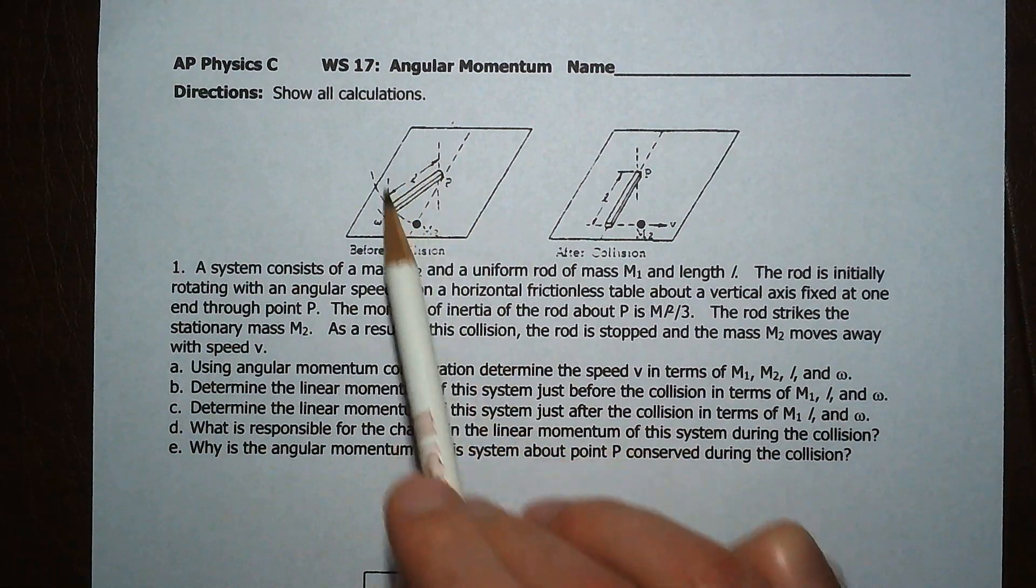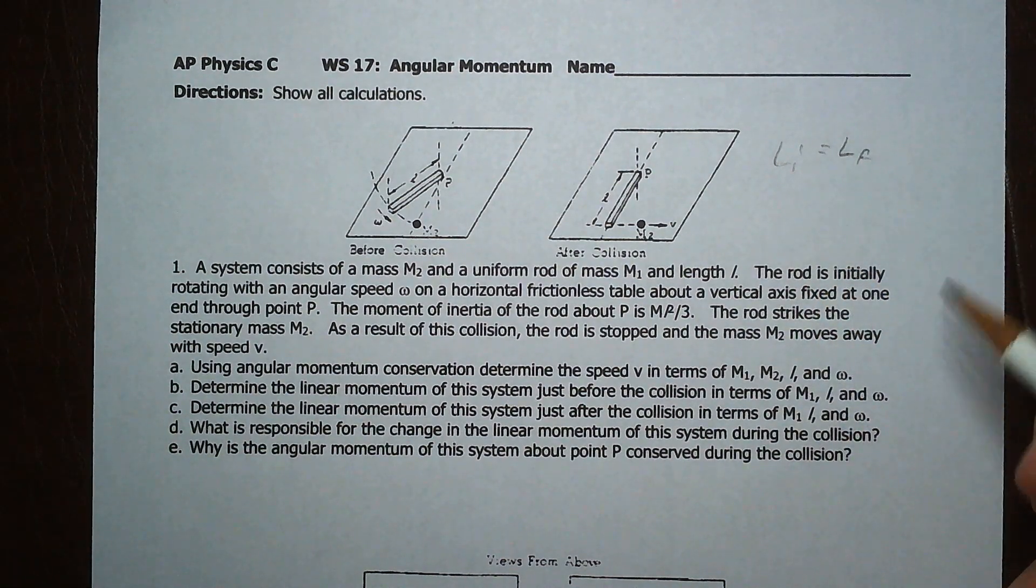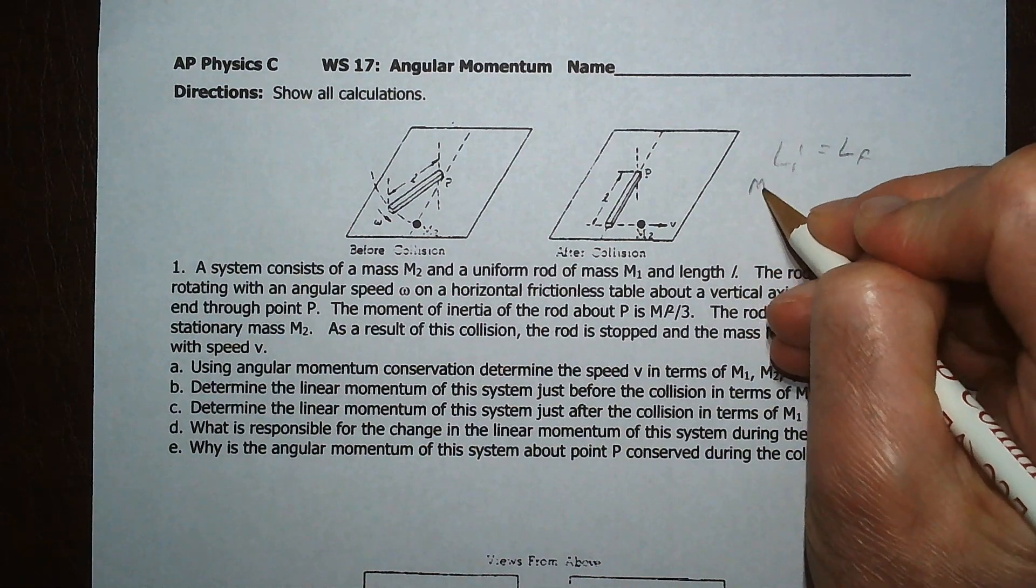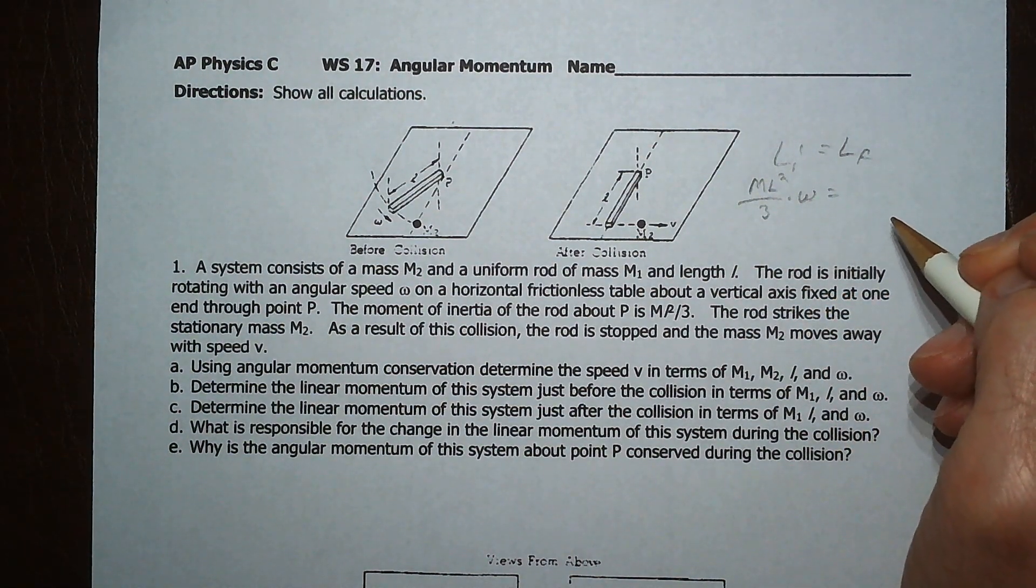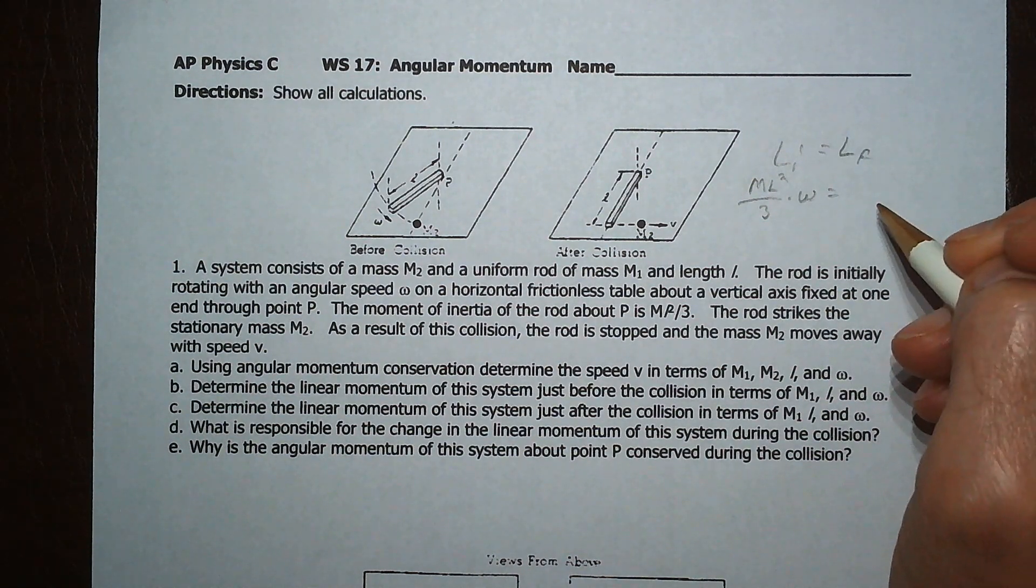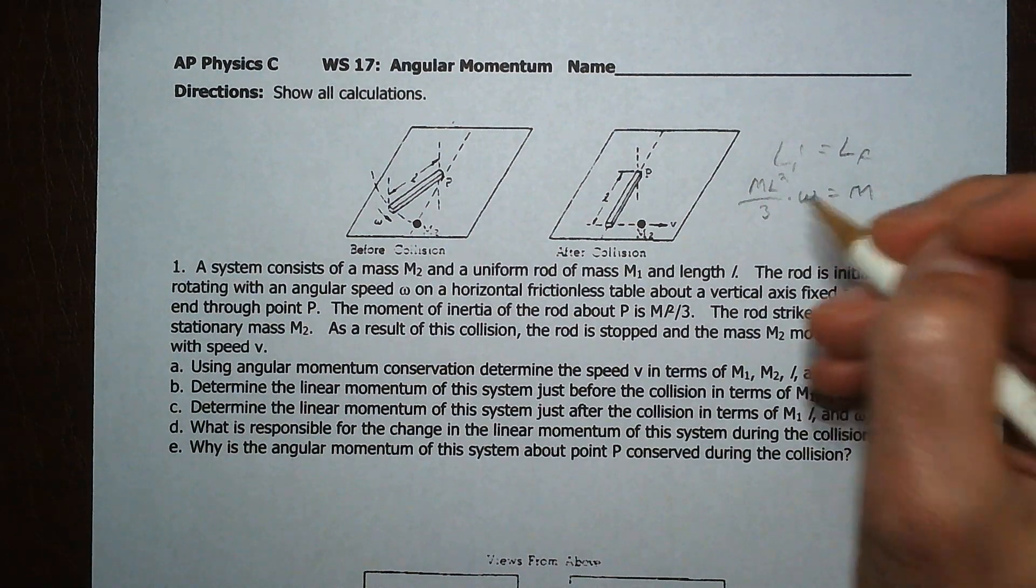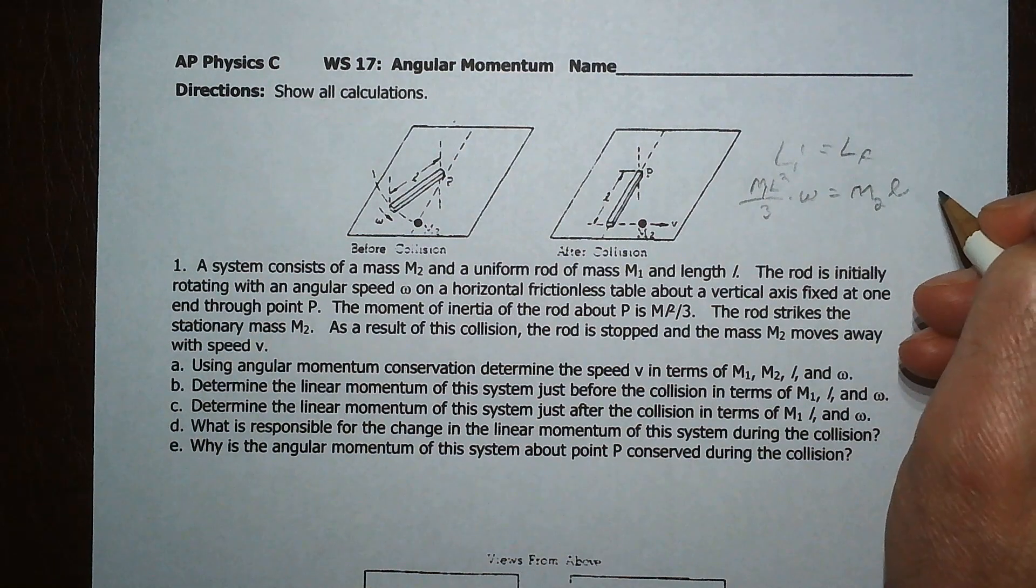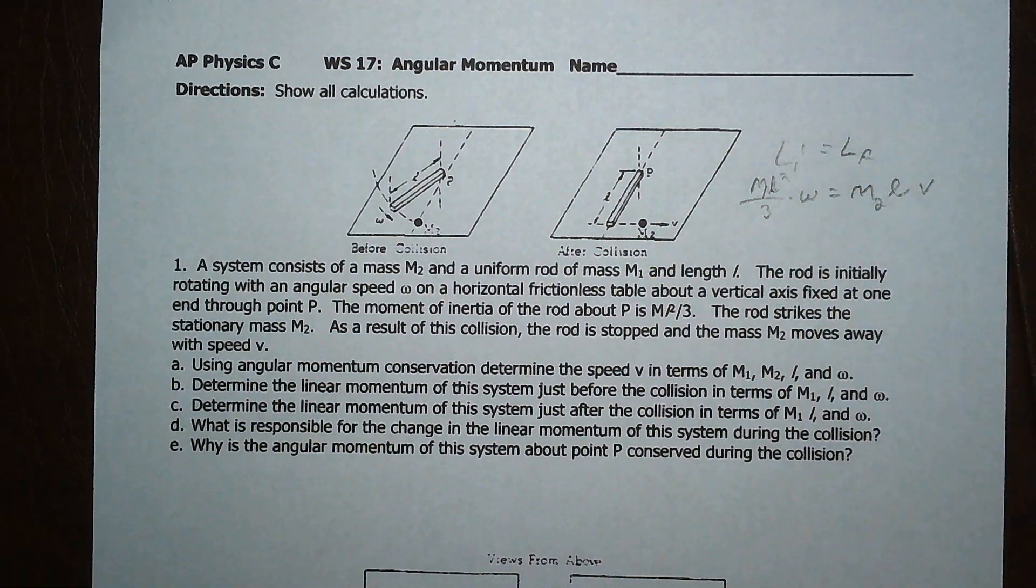Okay, so this thing rotates around here and hits this ball, comes to stop, and the ball goes out. So using angular momentum conservation, that means Li equals Lf. Well, it tells you what I is. It says it's ML squared over 3, and tells you what the angular speed is, so that's gonna be ML squared over 3 times omega, and that must be equal to MR squared times omega. And omega is V over R, so that's just simply going to be the mass 2, by the way this is mass 1 here.